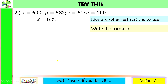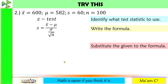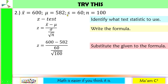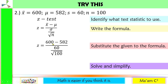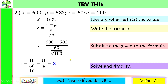Step 2: write the formula. Step 3: substitute the given. Sample mean is 600, population mean is 582. Since we do not have sigma, we use sample standard deviation, which is 60, and our sample size is 100. 600 minus 582 is 18, square root of 100 is 10, 60 divided by 10 is 6, and 18 divided by 6 is equal to 3. Here we did not need a calculator to solve for our Z value.